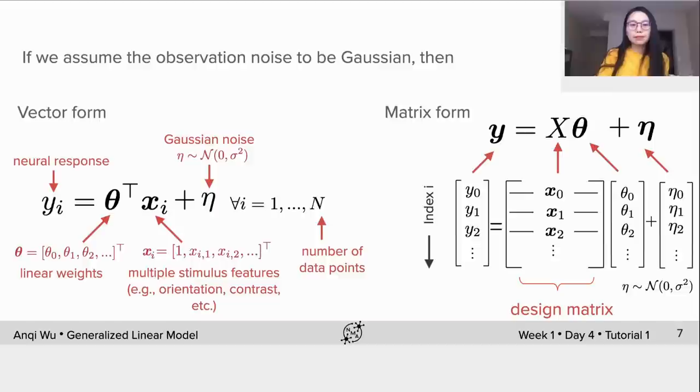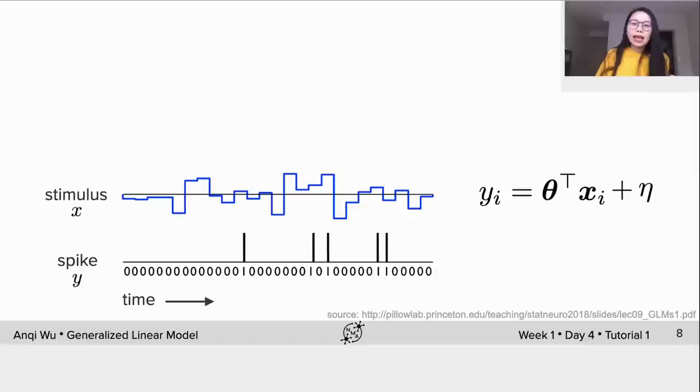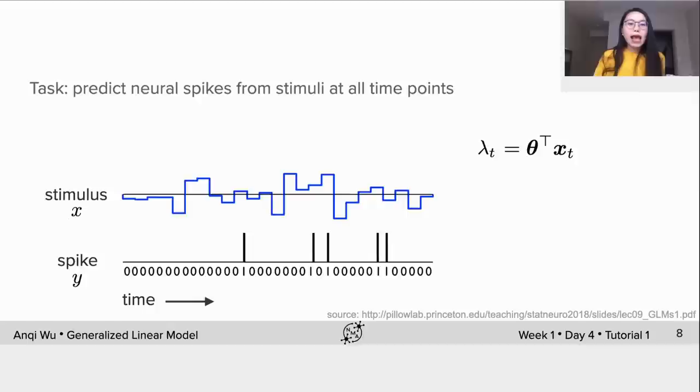We can use such a linear Gaussian model to do spike train encoding from stimulus. In this problem, the input X is stimulus and output Y is the spike count. The task is to predict neural spikes from stimuli at all time points. Here is the mathematical formulation: we have λₜ = θᵀXₜ, where Xₜ contains a vector of stimulus within a window ended at time t.